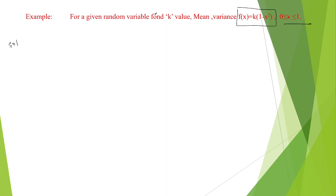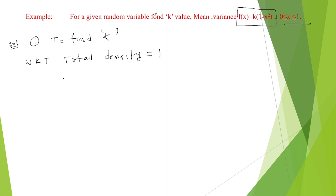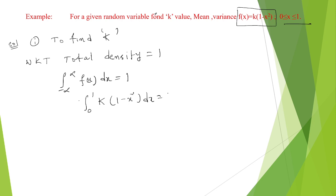Solution: first, to find k, we know that the total density function is always equal to 1. So we write the integral from minus infinity to plus infinity of f of x dx equals 1. With the limits given as 0 to 1, substituting f of x as k into (1 minus x squared), the integral from 0 to 1 of k into (1 minus x squared) dx equals 1.